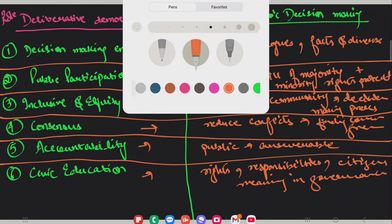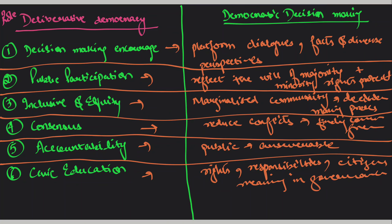अब यहाँ पर कुछ examples add करते हैं। पहला है decision-making encourage करना, जिसमें platform provide होता है, dialogues हो सकते हैं, facts and diverse perspectives हो सकते हैं — इसके लिए Narmada Dam का example लो। दूसरा, North East में जो tribal community अपने rights के लिए लड़ती हैं — उसे marginalized communities वाले example में use कर सकते हो।